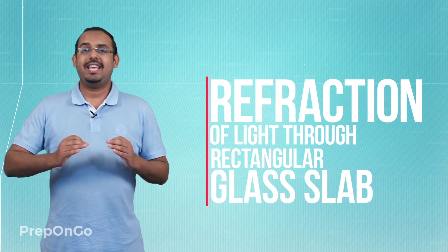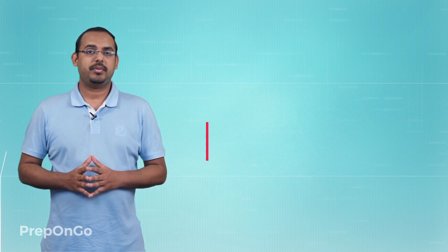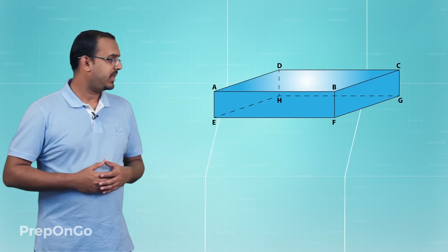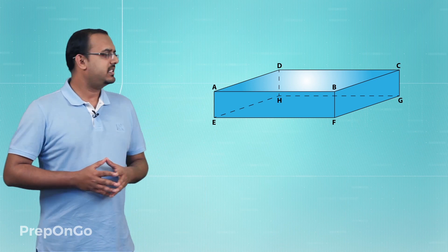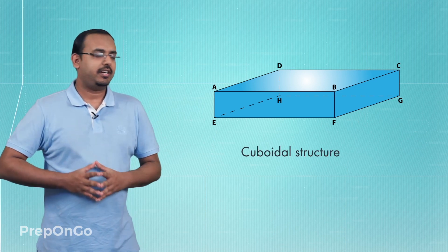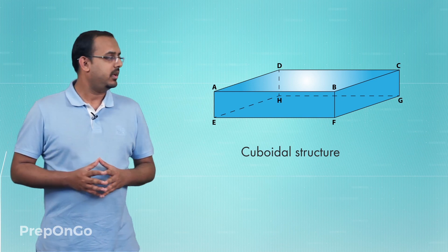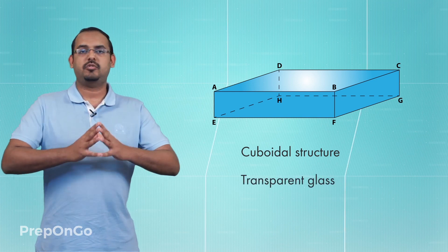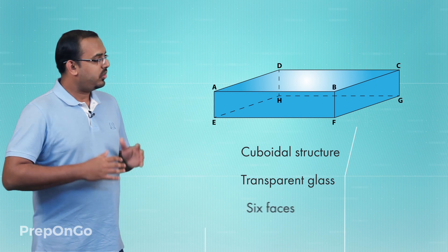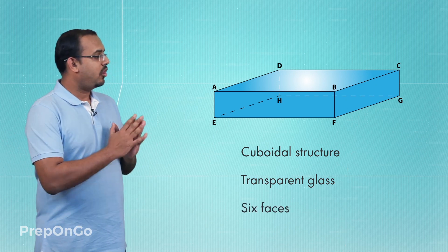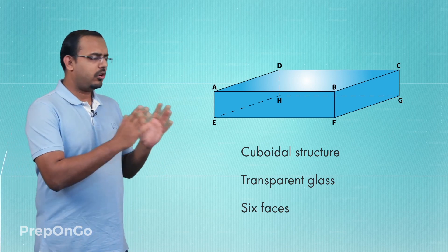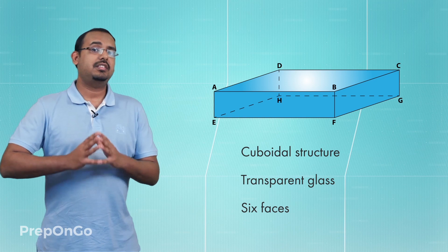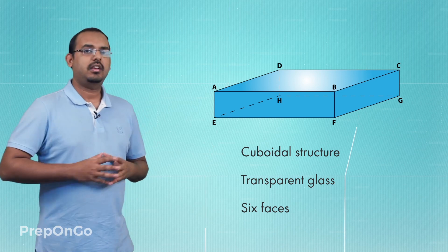In this lecture we'll discuss about the refraction of light which takes place from a rectangular glass slab. This glass slab is actually a cuboidal shape — it is completely made up of transparent glass. As you can see, there are six rectangular faces of this cuboidal structure, of different dimensions.